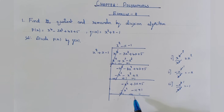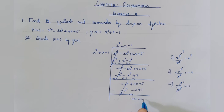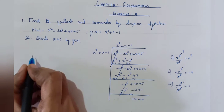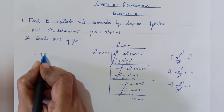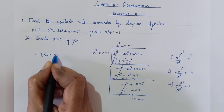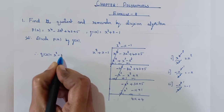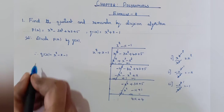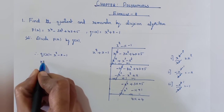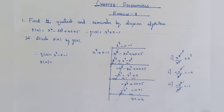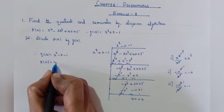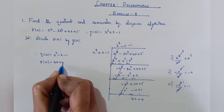Plus 3x plus x is plus 4x, plus 5 minus 1 is plus 4. Therefore, the quotient q of x is equal to x square minus x minus 1 and the remainder r of x is 4x plus 4.